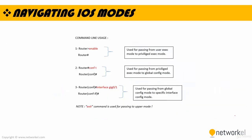Here is how we navigate between IOS modes. To go from user exec to privileged exec, type enable. To pass from privileged exec mode to global config mode, type conf t. To pass from global config mode to a specific interface config mode, type the interface you want to go into, like interface g0/1. And please keep in mind that the exit command is used for passing to the upper mode. For example, when you're in config mode and type exit, you go to the privileged exec mode.